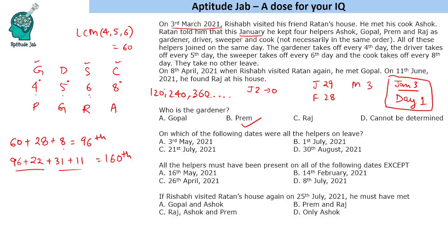Let us find the 120th day first. The 96th day was 8th April. Adding 24 more days gives 2nd May. But the option given is 3rd May, so that is not the answer. For 120 more days after that — essentially 4 months — looking at the given options, this could be towards end of August or beginning of September.